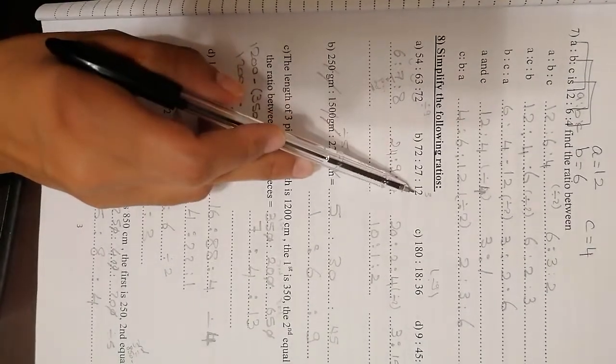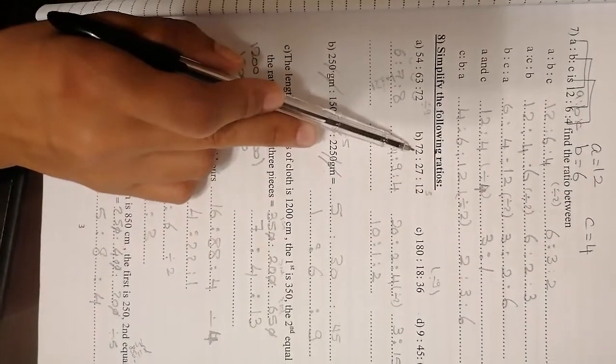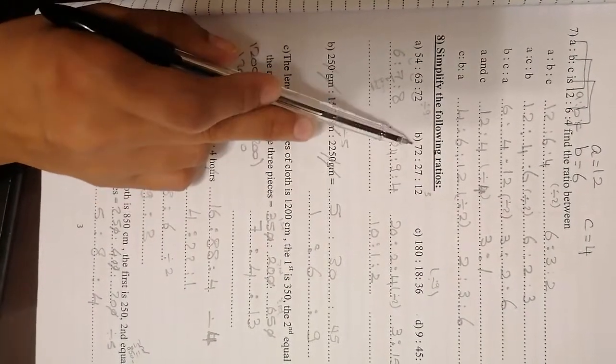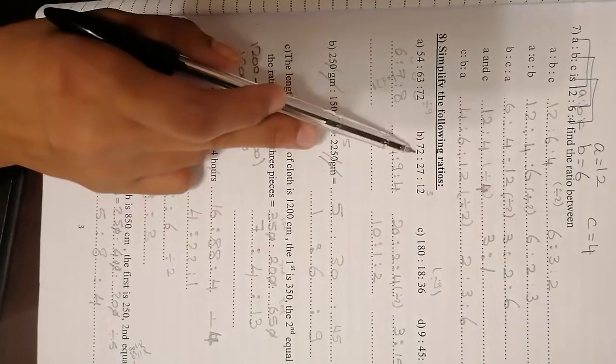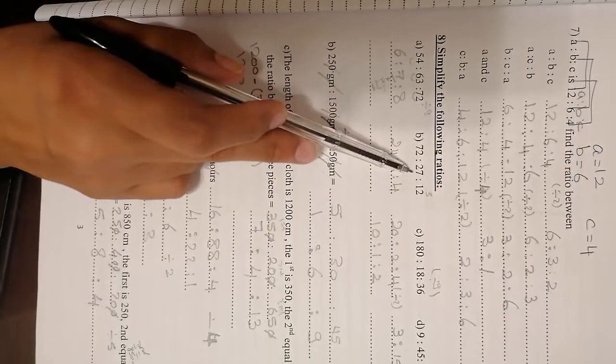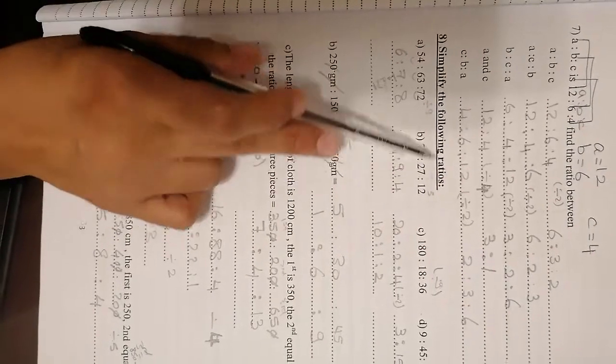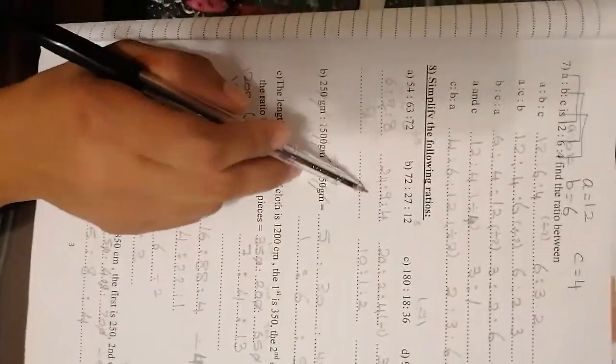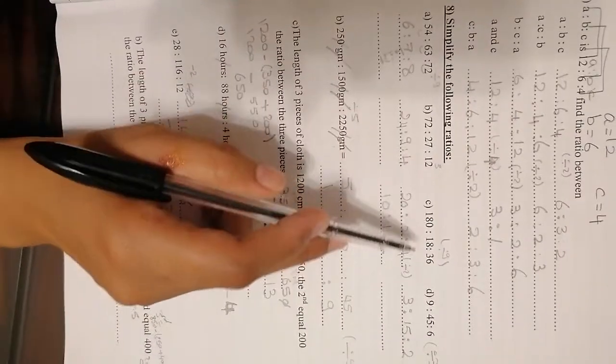72 to 27 to 12. Here, if you add every two digits, you are going to find that it's in table 3. So 7 plus 2 equals 9, 2 plus 7 equals 9, 1 plus 2 equals 3. So the three numbers are divisible by 3, so you are going to make them divided by 3. On the calculator, it will be 24 to 9 to 4.